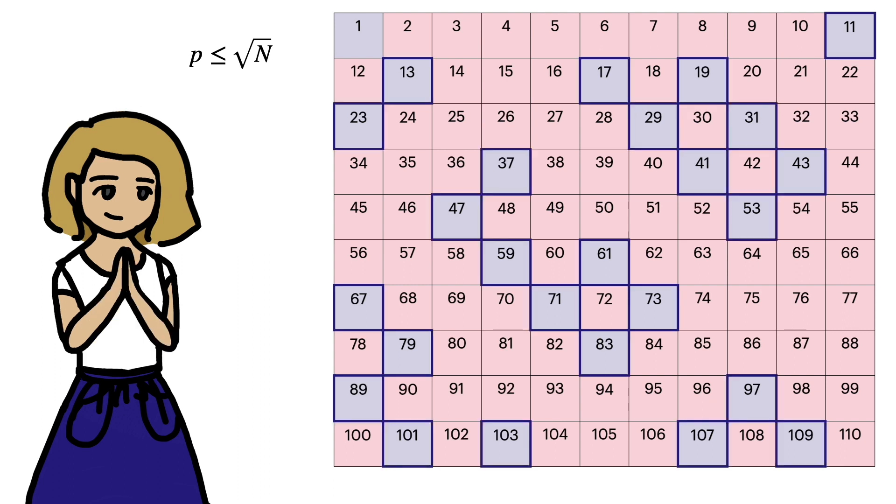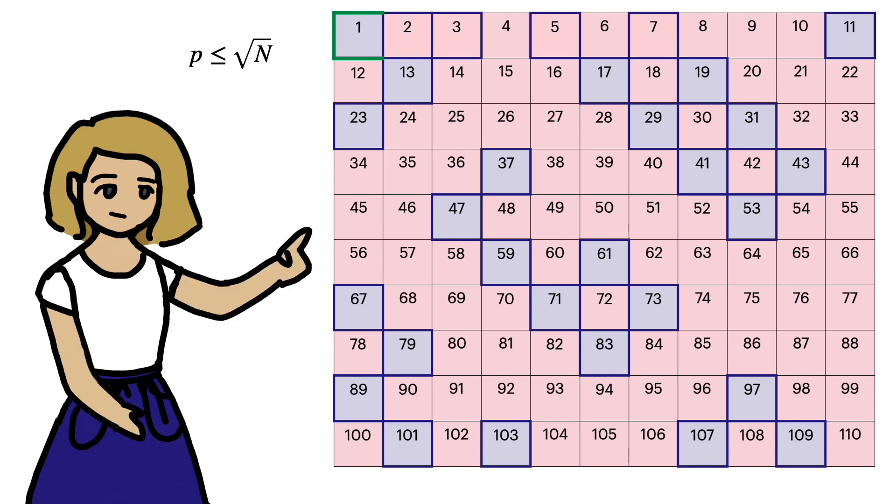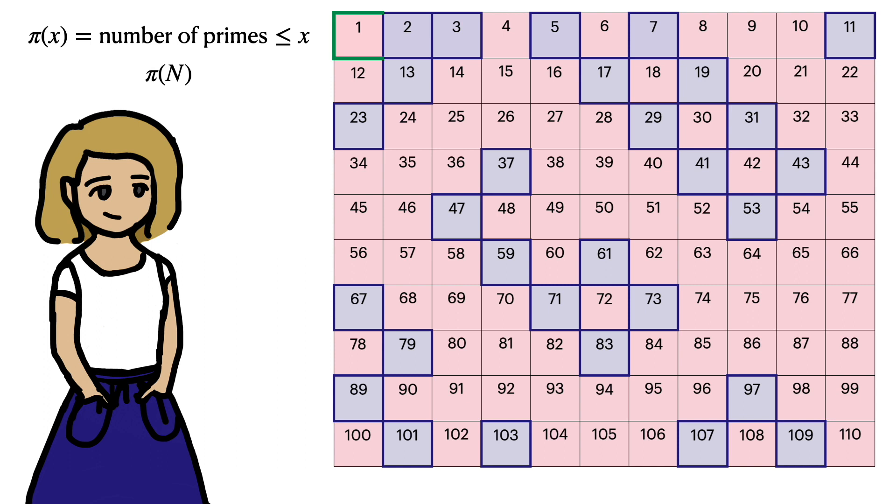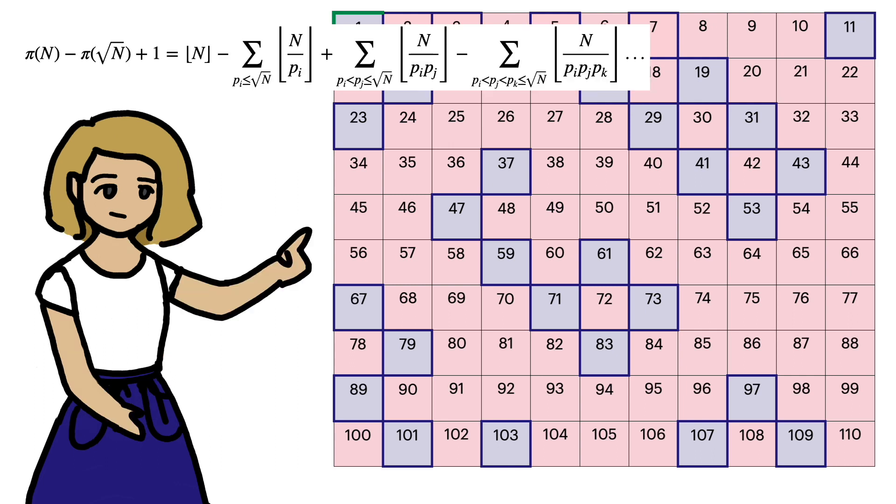Then, we only have prime numbers, and the number 1, remaining. Also, notice that we've removed all the primes less than or equal to root n. If we use π(x) to denote the number of primes below x, we can say that our sieve leaves π(n) minus π(√n) plus 1 integers remaining. And this is on the left-hand side of Legendre's formula, so keep it in mind.